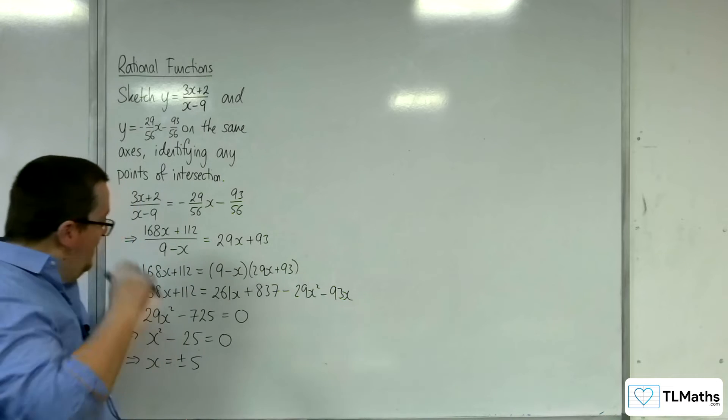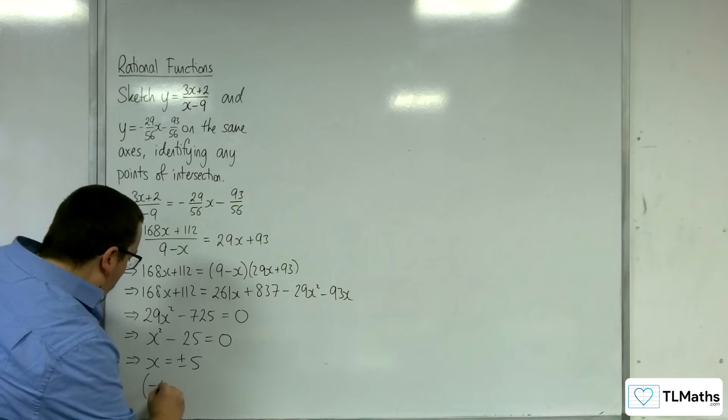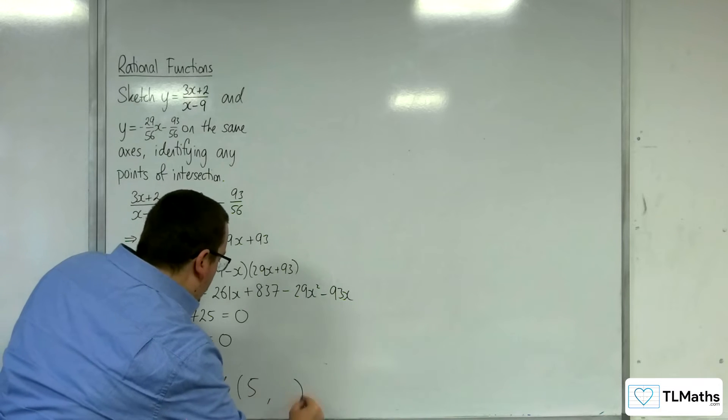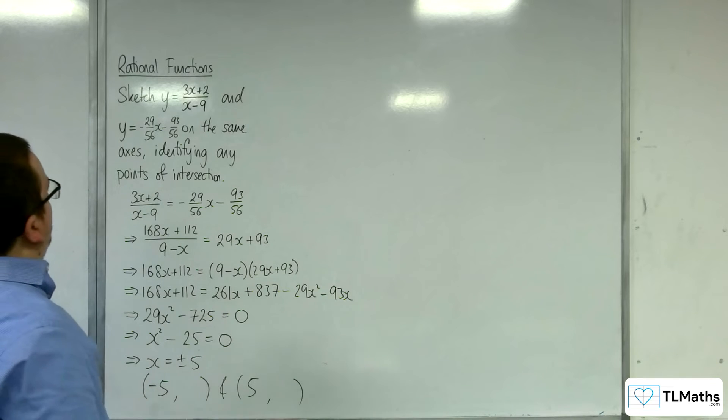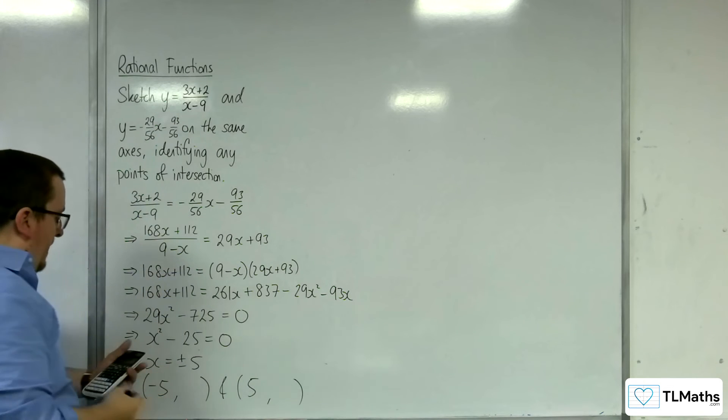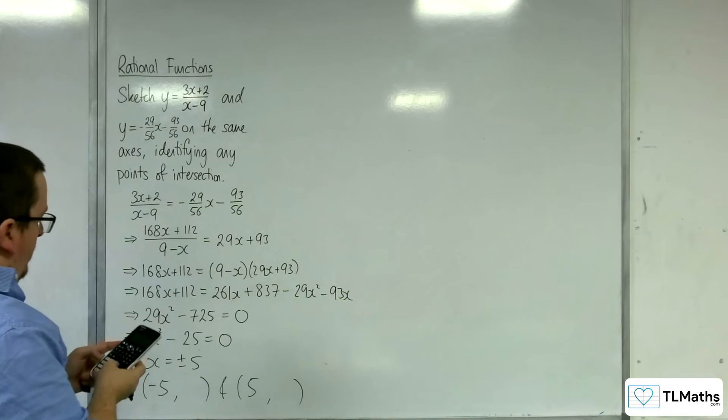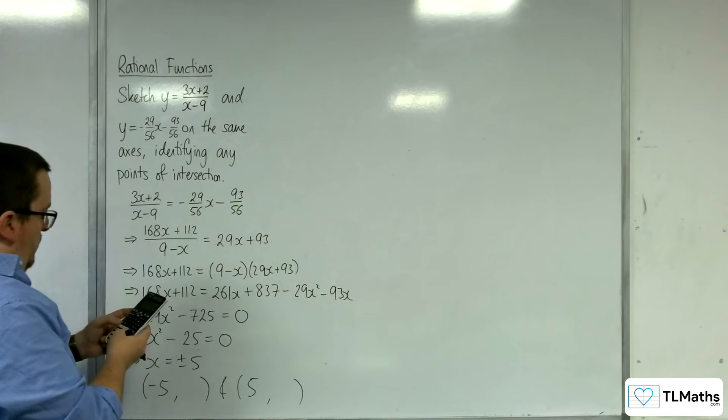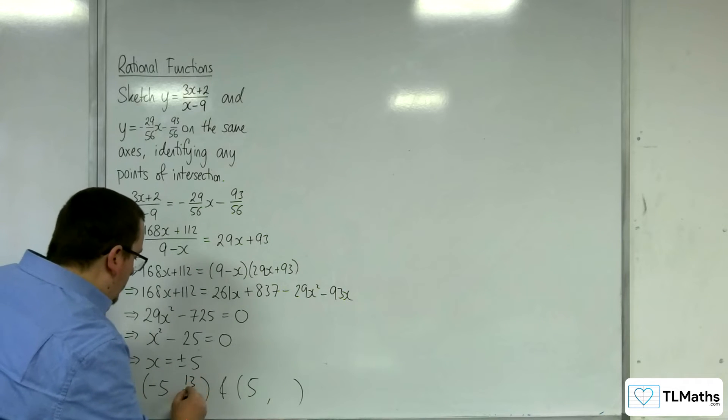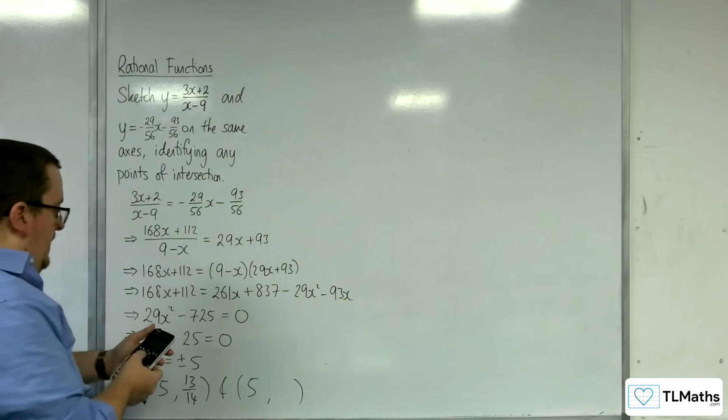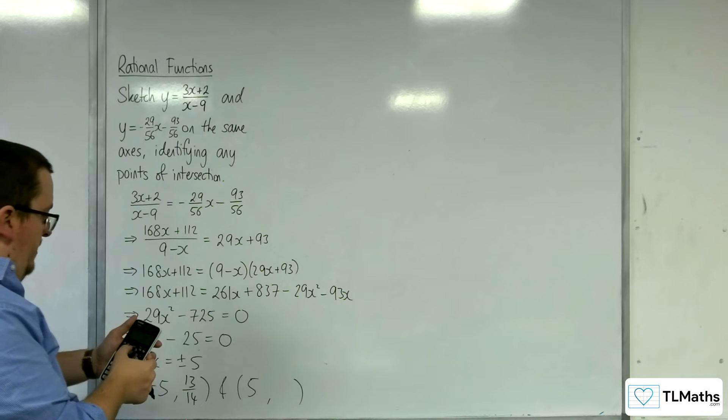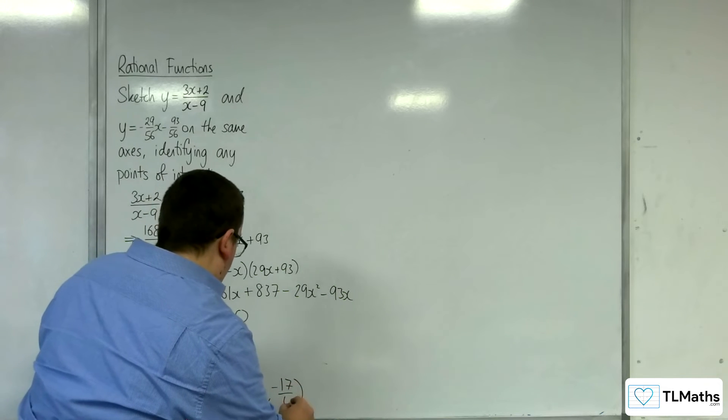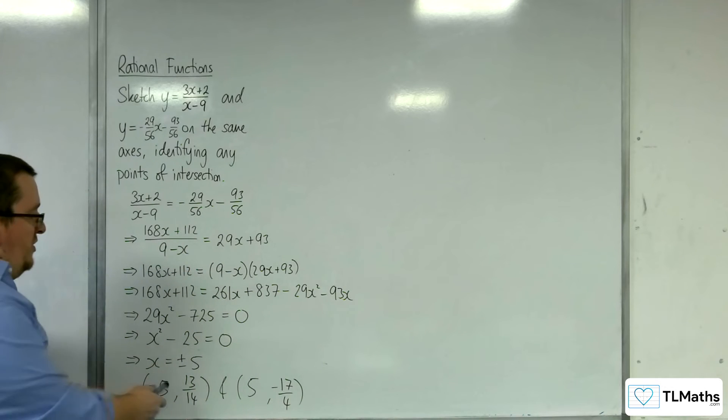So you see, I told you there was going to be some nice numbers at the end. So we've got minus 5 something, and 5 something, these are my points of intersection. So I'm not going to substitute into that one, I'm going to substitute into that one. So what we've got, 3 lots of minus 5 plus 2 over minus 5 take away 9, so that's 13 over 14. And if I have 5 instead of minus 5, I get minus 17 over 4. So these are my two points of intersection.